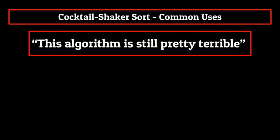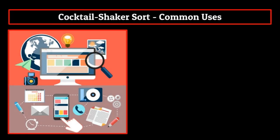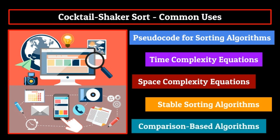This algorithm is still pretty terrible — that is codeword for: this algorithm does not get implemented very often in real-world applications. Much like bubble sort, cocktail shaker sort is inefficient, leading to it not having much practical use. The algorithm is mainly used as an educational tool for new computer science students to help get them comfortable with topics surrounding sorting algorithms. There are extreme advantages to this, however, since it's best to introduce new concepts through examples which are as simple as possible. By learning bubble sort and now cocktail shaker sort, you should have a fairly good understanding of many important topics: pseudocode for sorting algorithms, time complexity equations, space complexity equations, stable sorting algorithms, and comparison-based algorithms. All of this will come in handy the further we traverse along our sorting algorithm journey.